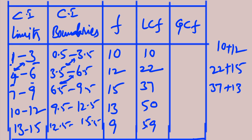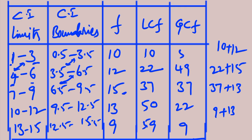For greater than cumulative frequencies, we again use the original frequencies — not the LCF. For GCF, we move from the bottom upwards. Write the last frequency directly, then add upwards: 9 + 13 = 22, 22 + 15 = 37, 37 + 12 = 49, 49 + 10 = 59. The last value of both LCF and GCF must be equal — both give 59, which is the sum of all frequencies.